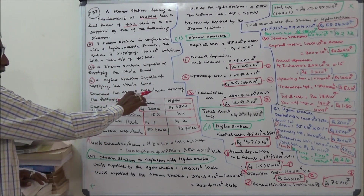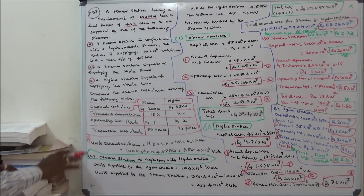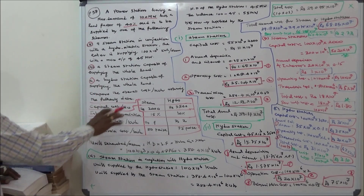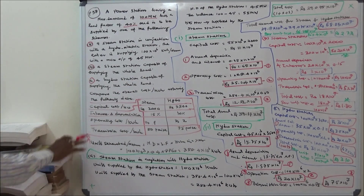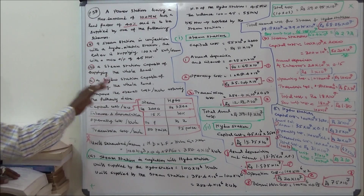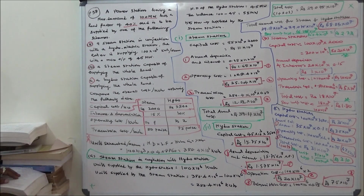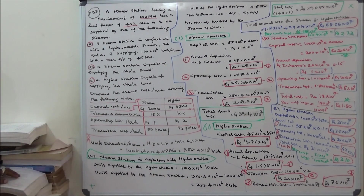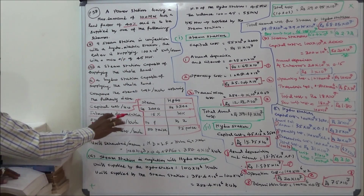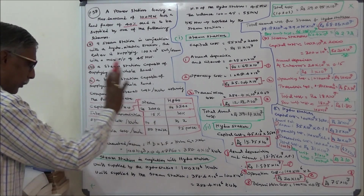Compare the overall cost per kilowatt hour assuming the following data. Capital cost per kilowatt: steam power plant rupees 2000, hydro power plant rupees 3500. Interest and depreciation on capital cost: steam station 15%, hydro station 10%. Operating cost per kilowatt hour: rupees 1 for steam station, rupees 2 for hydro station. Transmission cost per kilowatt hour: 50 paise for steam station, 75 paise for hydro station.